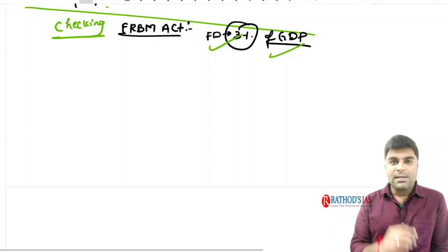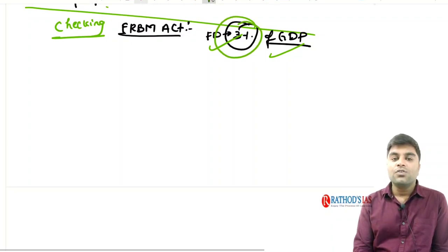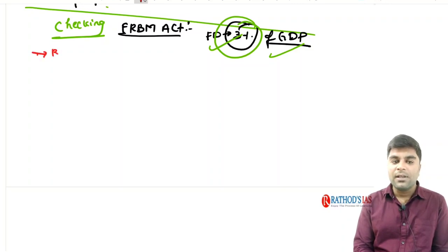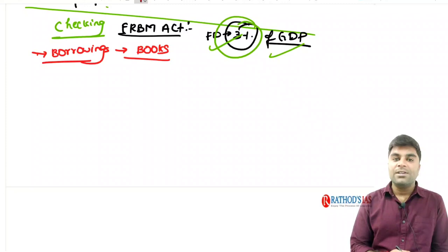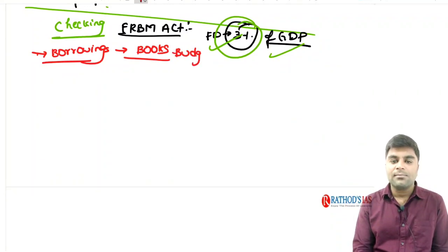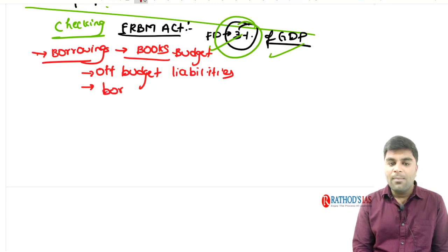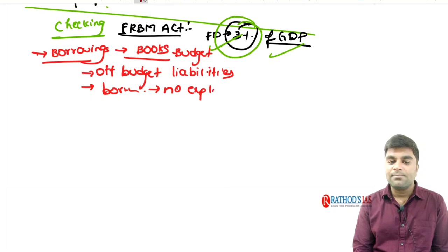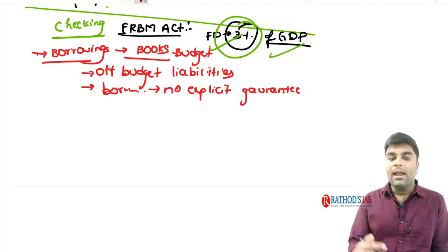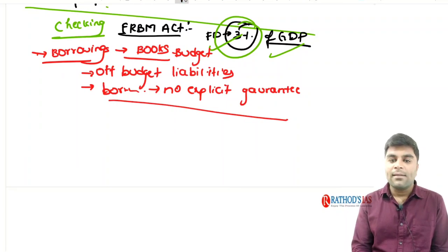The FRBM Act says that the fiscal deficit of the government should not cross 3% of GDP at any given point of time. The borrowings made by the government in a financial year is called fiscal deficit. However, the FRBM Act only calculates borrowings mentioned in the budget books — it does not calculate off-budget liabilities.